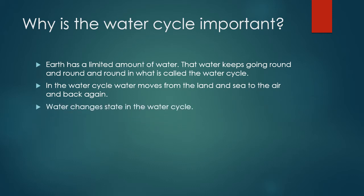Water changes state in the water cycle. Water starts off first by evaporation from rivers, lakes, dams and seas. Water changes to a gaseous state — it evaporates and forms clouds. When clouds are formed, condensation takes place.